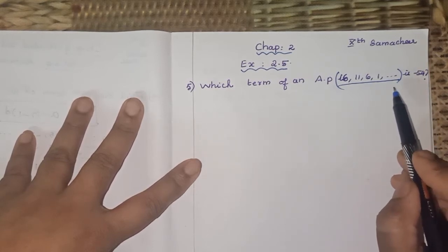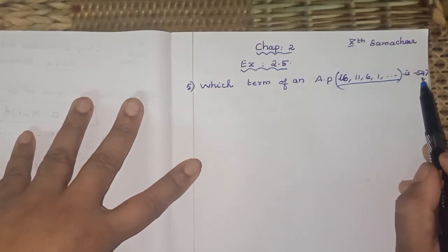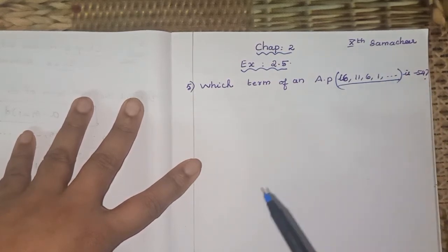Which term? So nth term, n only you have to find. T_n is actually given, that n you have to find. Which term you are getting minus 54?